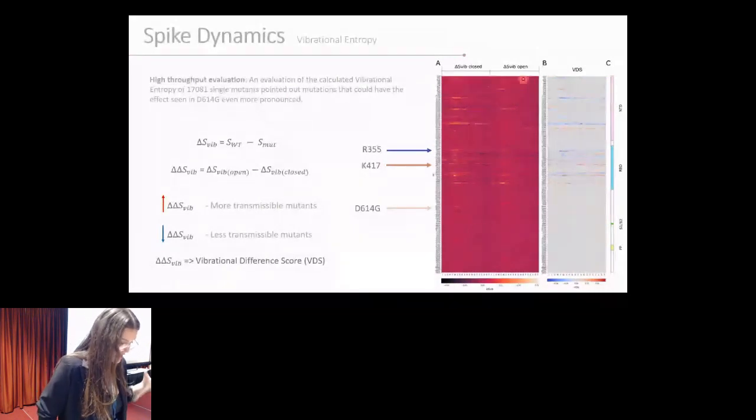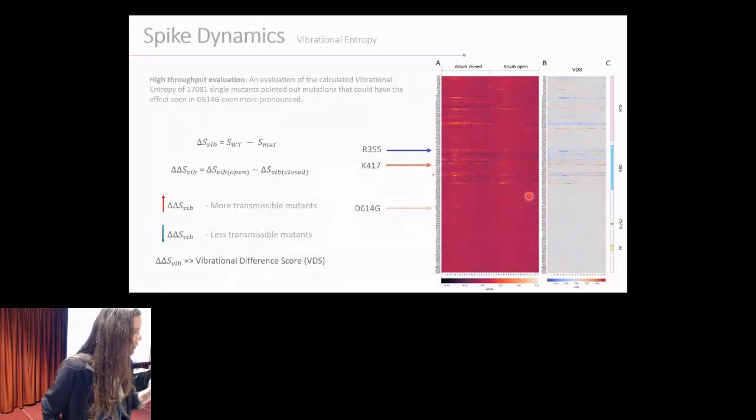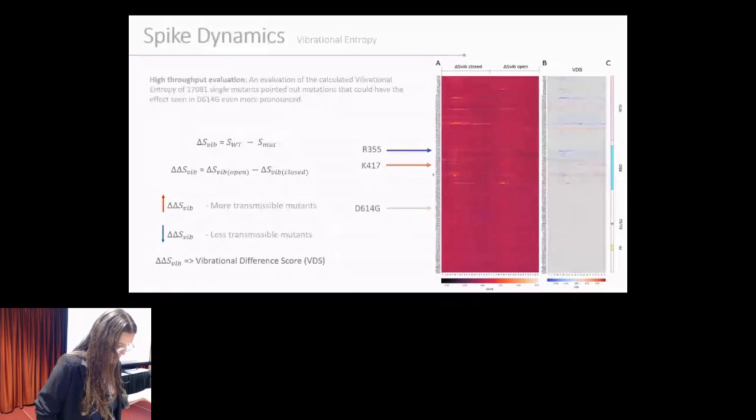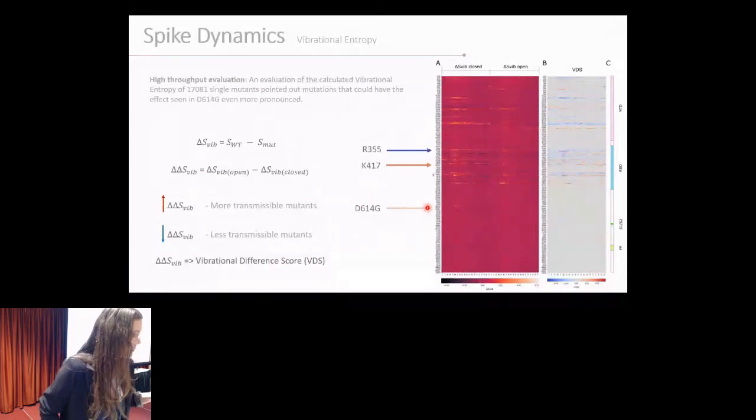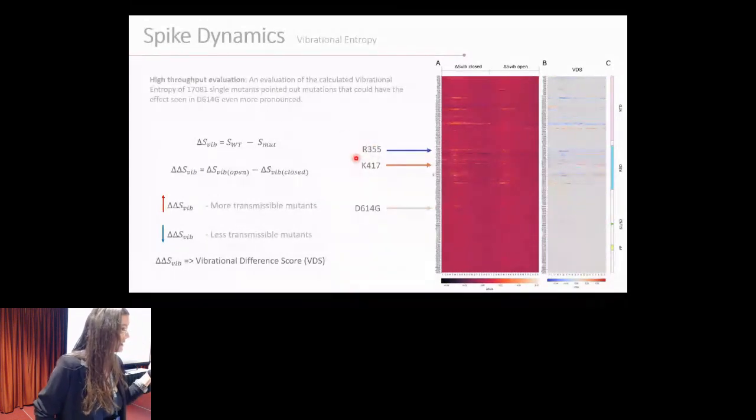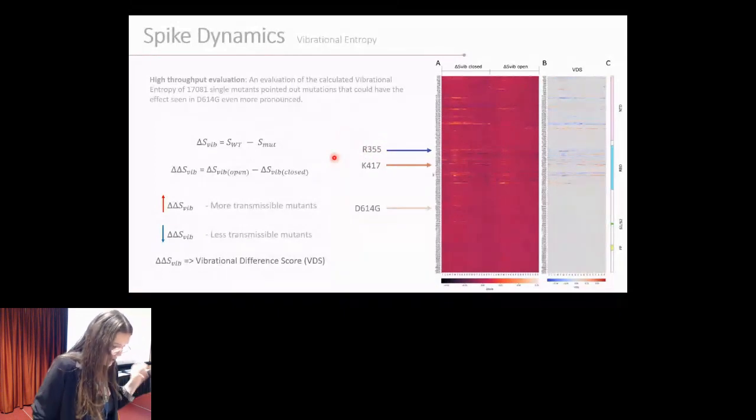We saw for the closed and the open state, we did this calculation, and we created a new measure considering both these values, which is VDS, vibrational difference score. We saw that even though the D614G had interesting results in this heat map, we had many mutations in many positions all around in the RBD and the N-terminal domain where we had much more relevant results. For example, for the K417 mutations, and on the other side, making the closed state more rigid and the open state more flexible, we had many mutations as well, for example, in the position R355.